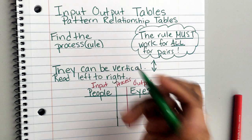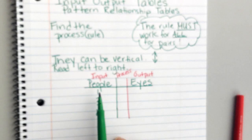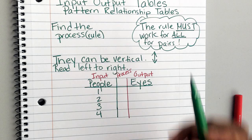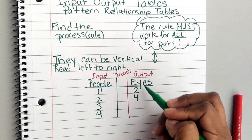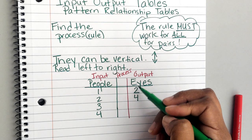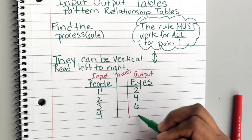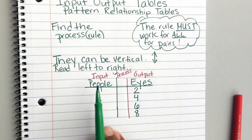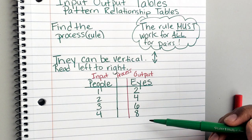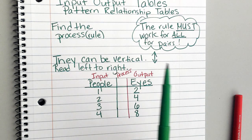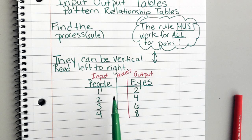Let's say you have one person — two eyes. Two people — four eyes, meaning if you count the eyes of the people next to you, you would see four eyes with two people. Three people would be six eyes, four people would be eight. Now, there's a process to get to the other side. Always read left to right, never read down through all the inputs or all the outputs — that's wrong. You have to go input to output. From one to two, notice it gets bigger. There are two operations that get bigger: adding or multiplying.